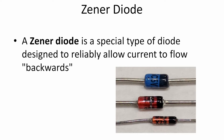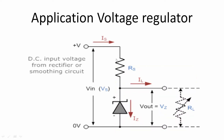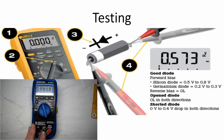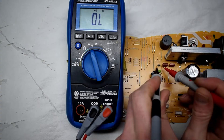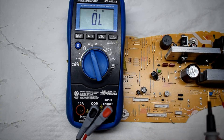Zener diodes are a special type of diode designed to reliably allow current to flow backwards. They're used for voltage regulation because they maintain a constant voltage as current flows through them. This is an application of a voltage regulator using a Zener diode — you'll have a constant Zener current and therefore a constant voltage output, depending on the reverse voltage rating of the Zener diode.